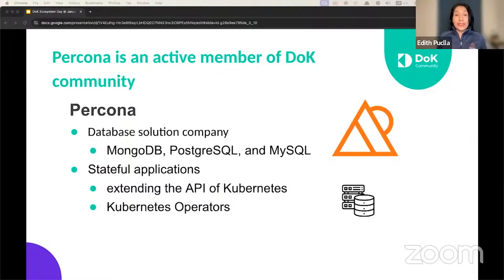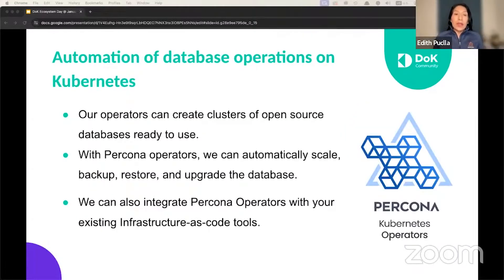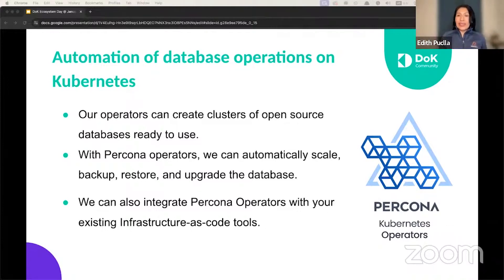We call these gaps with solutions. By extending the API of Kubernetes and developing Kubernetes Operators, we were able to fulfill the majority of these gaps. Our Operator can create clusters of open source databases ready-to-use, eliminating deployment complexity, including issues such as configuration errors, pods not starting, and nodes failing to join the cluster. With Percona Operators, we can automatically scale, backup, restore, and upgrade the database.